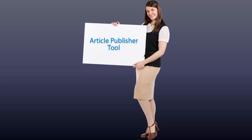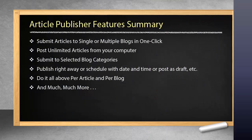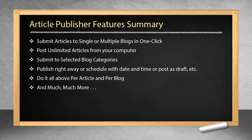Article publisher tool feature summary. Submit articles to single or multiple blogs in one click. Post unlimited articles from your computer. Submit to selected blog categories. Publish right away or schedule with date and time, or post as draft, etc. Do all of the above per article and per blog.